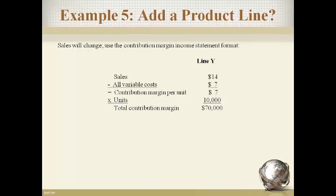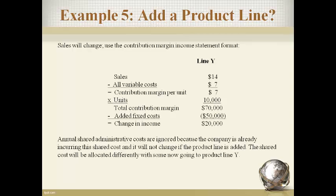Sales will change, so use the contribution margin income statement format. Compute the total contribution margin generated by product Y and compare this to the added fixed cost — the result will be an additional $20,000 in operating income. Ignore costs that will not change if product Y is added.